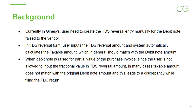Currently in Guinness, the user needs to create the TDS Reversal entry manually for the debit note raised to the vendor. In the TDS Reversal form, the user inputs the TDS Reversal amount and the system automatically calculates the taxable amount, which in general should match with the debit note amount. When a debit note is raised for a partial value of the purchased invoice, since the user is not allowed to input a fractional value in TDS Reversal amount, in many cases the taxable amount does not match with the original debit note amount, and this leads to a discrepancy while filing the TDS return.